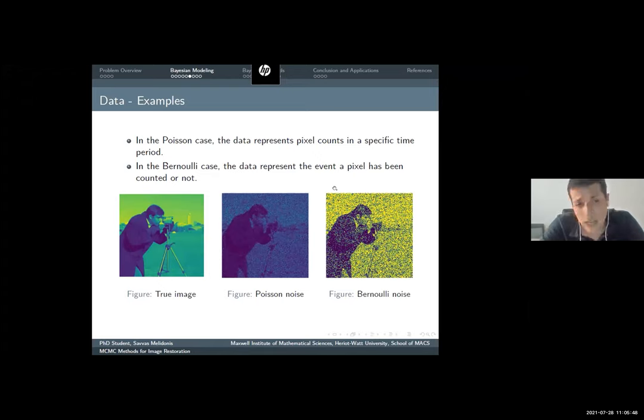Let's give some examples of how the data looks like. In the Gaussian case, we have our true image, we have some noise. What we actually have is an image with some random fluctuations around. In the Poisson case, the data represents pixel counts in a specific time period. In the Bernoulli case, we have mainly a matrix of 0 and 1. It represents the event that the pixel has been reported or not.